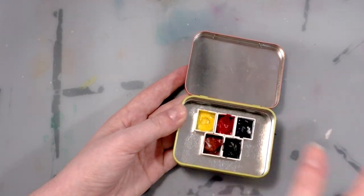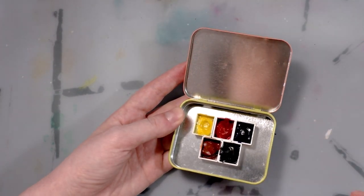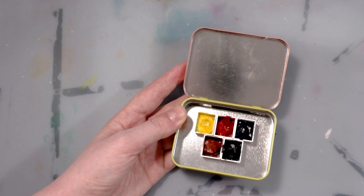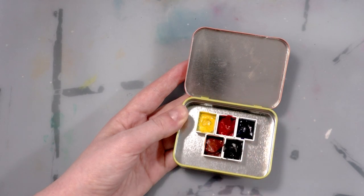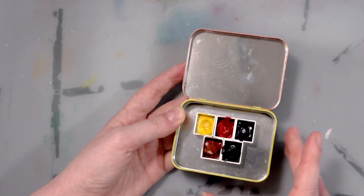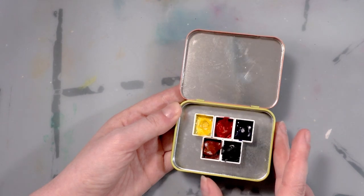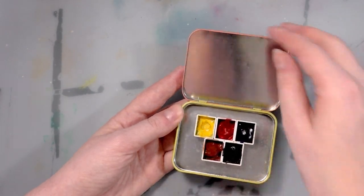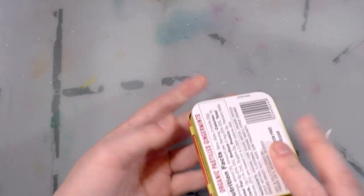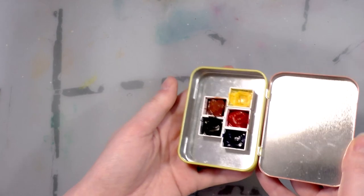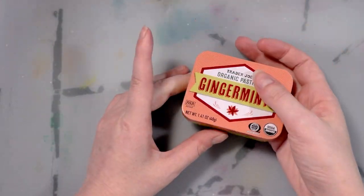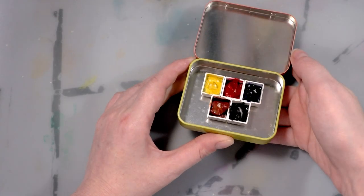I'm actually gonna leave the lid just plain because the problem I had with the Daniel Smith one I did and you guys can check that out here in the links is that the paint stained it and not just like a little bit of staining but like pretty significant amount of staining whereas if I just leave it the plain metal I don't think it's gonna stain. So that is just a super simple super basic little tutorial for one of the many ways you can turn a mint tin into a mini palette.